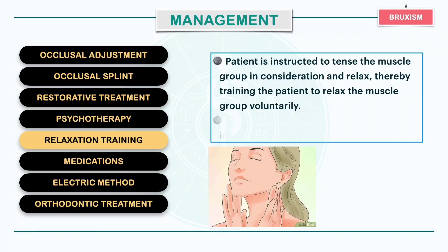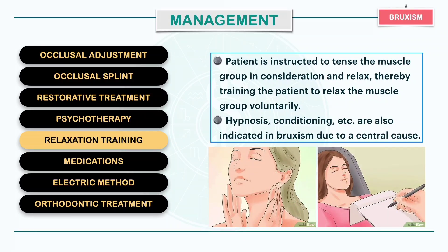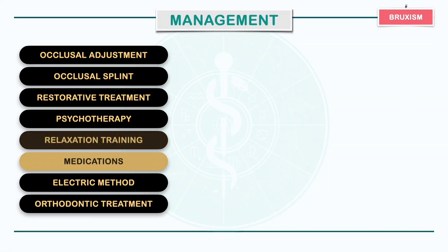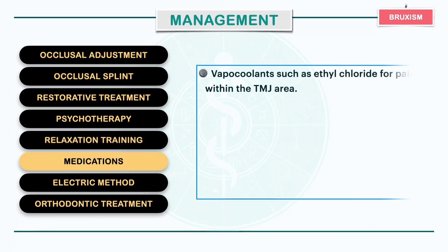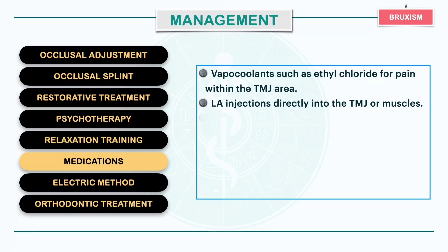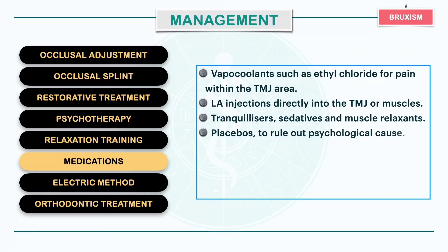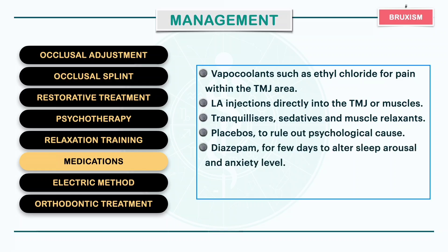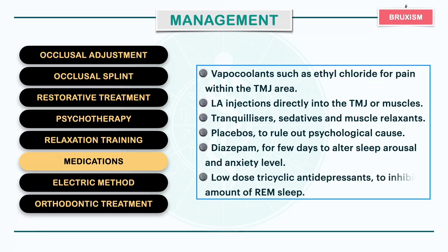Hypnosis and conditioning are also indicated in cases that have a central cause. Medications include vapo coolants such as ethyl chloride for pain within the TMJ area, local anesthetic injections directly into the TMJ or muscles, tranquilizers, sedatives and muscle relaxants. Placebos are used to rule out psychological cures. Diazepam can be given for a few days to alter sleep arousal and anxiety levels, and low-dose tricyclic antidepressants are used to inhibit the amount of REM sleep.